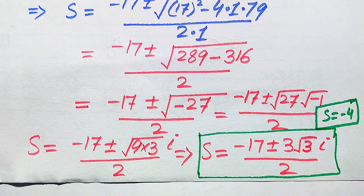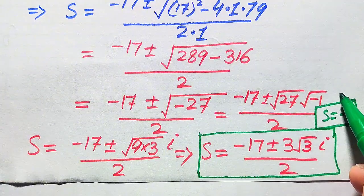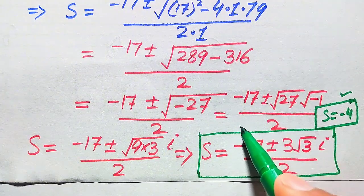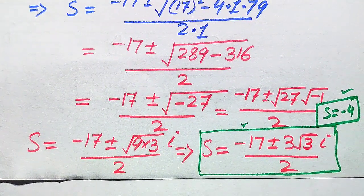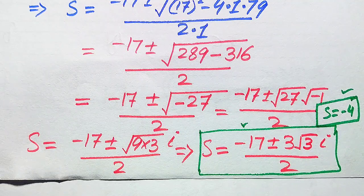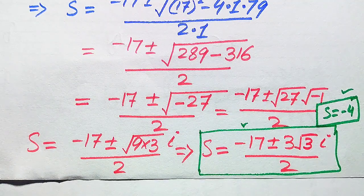So the three roots of the given equation are: s = −4 (one real root) and s = (−17 ± 3i√3) / 2 (two complex roots). These are the three roots and this is our final answer. Thank you so much for watching this video — please subscribe to my channel for more exciting videos.